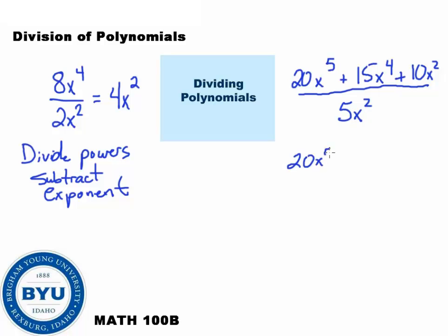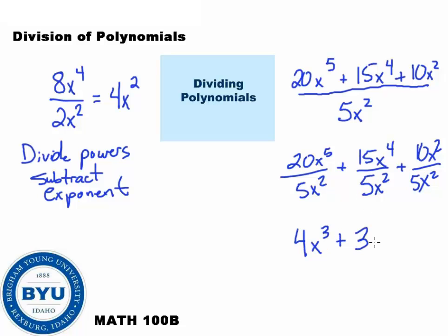I'll go ahead and write out each step here. Basically, I'm just rewriting this so that they're all divided by the 5x squared. So when we do this, we can now cancel it out. I've got 20 divided by 5, that's just 4. x to the fifth divided by x squared, we subtract the powers, the exponents, we get 4x cubed. 15 divided by 5 is 3. x to the fourth over x squared, we would subtract, we get 2. And then we have plus 10 divided by 5, that's just 2. And x squared over x squared, that just cancels out. And that is our answer.